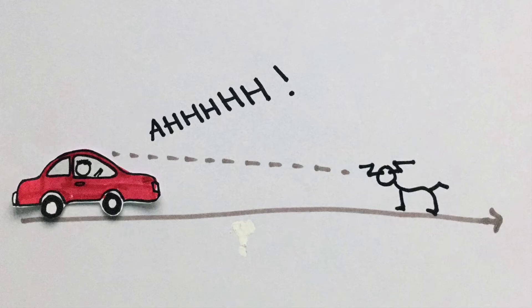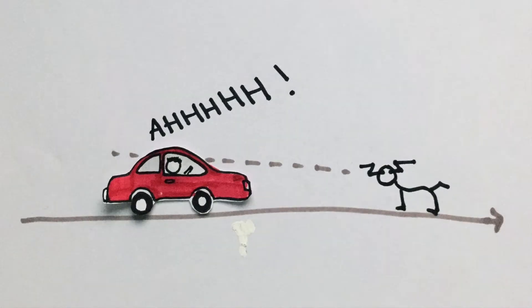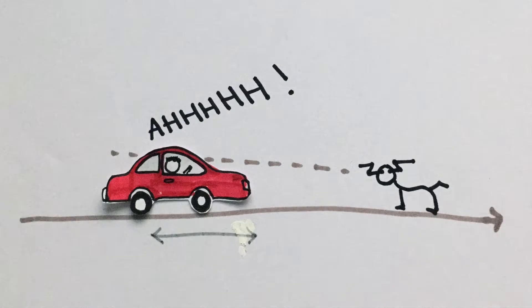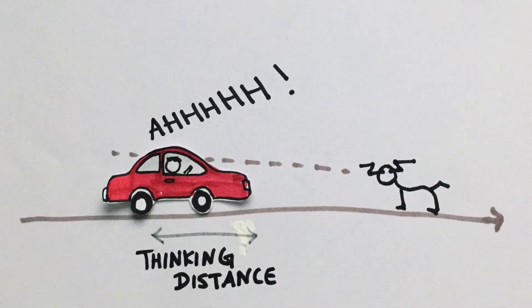During the time that the driver is still trying to react to a situation, the car keeps traveling forward because he hasn't stepped on the brakes just yet, so we call this the thinking distance.